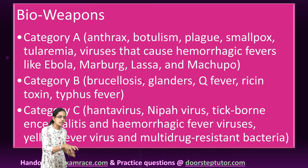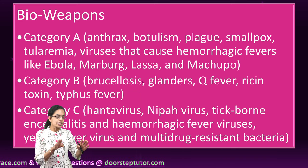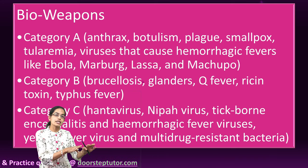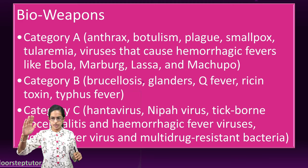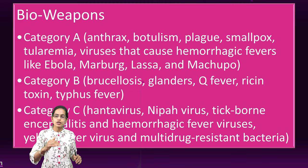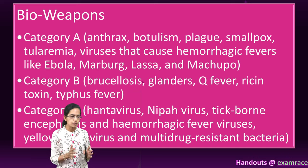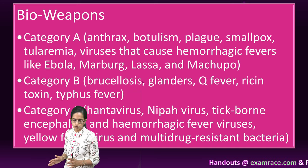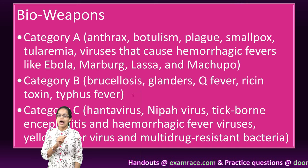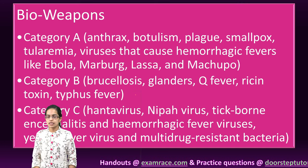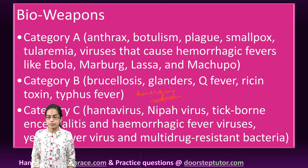Category B is moderate and results in lesser mortality compared to Category A. For example, Q fever, ricin toxin, and typhus fever are some examples. They are considered emerging diseases — not presently there but emerging in nature.